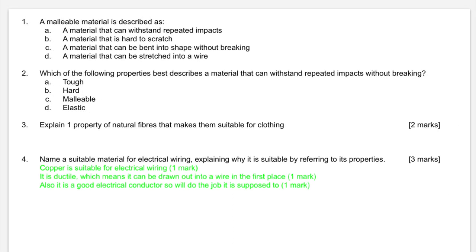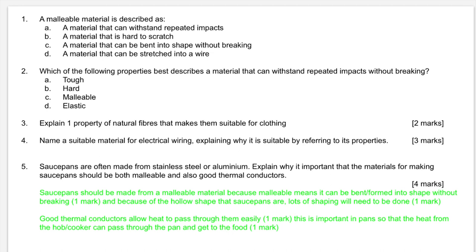For the copper question worth three marks, you'll only get one mark for putting copper as a material. The question says 'properties' plural, so aim for at least two. You also need to explain — just writing 'it's ductile' isn't enough; you need to say it's ductile meaning it can be drawn out into a wire. Similarly, being a good electrical conductor should be explained by relating it to its job of conducting electricity. You could also mention malleability, since cables get bent in many directions and must do so without breaking. For the saucepans question, you must talk about being malleable and being a good thermal conductor — and relate your answer to saucepans specifically for full marks.